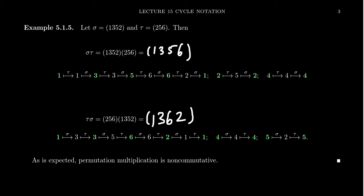However, sigma tau is (1 3 5 6) and tau sigma is (1 3 6 2) — these are not the same four-cycle. This is an example showing that permutation multiplication is non-commutative. It is actually very rare when permutations will commute with each other.